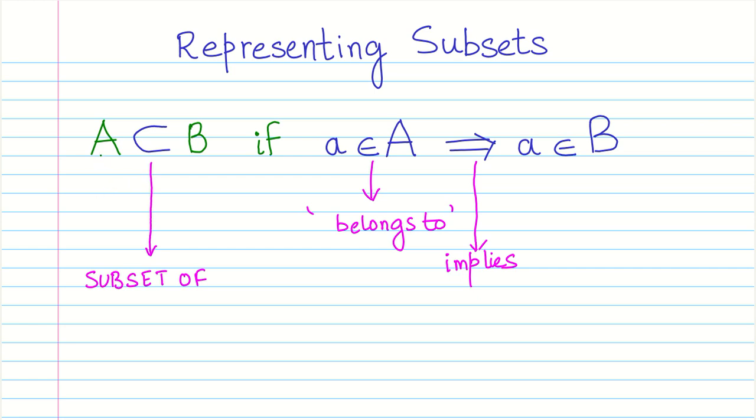Now we say that a set A here is a subset of B and this sign over here, the sign of a C with long tails, this is a sign of subset. So A is a subset of B if an element a belongs to a set A implies that the element a also belongs to B, which means that all the elements of set A must be present in set B as well. This is how we represent subsets.